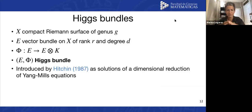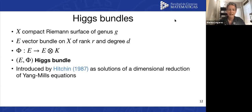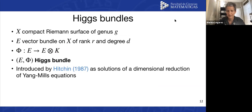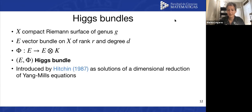Let me define what a Higgs bundle is — it was in the title of the talk. You take a compact Riemann surface of genus g, a vector bundle E on your compact Riemann surface of rank r and degree d, and then you take something called the Higgs field, which is a section of the endomorphisms of the bundle tensored with the canonical bundle. So you have matrices of one-forms over each point of the compact Riemann surface. These are Higgs bundles. Hitchin introduced them in a paper before the one I showed you, as solutions of a dimensional reduction of the Yang-Mills equations — this dimensional reduction produces what we know as the Hitchin equations.